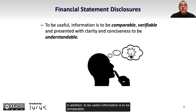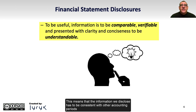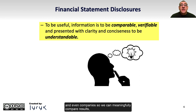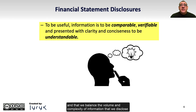In addition, to be useful, information is to be comparable, verifiable, and presented with clarity and conciseness to be understandable. This means that the information we disclose has to be consistent with other accounting periods and even companies so we can meaningfully compare results, and that there must be a way for us to verify economic events and transactions, and that we balance the volume and complexity of information so that it can be understood by a reasonably competent user.